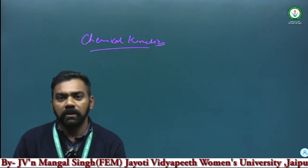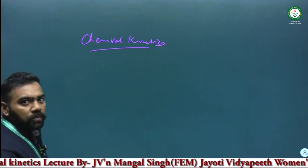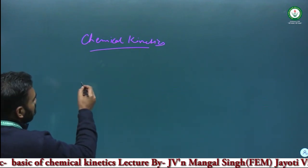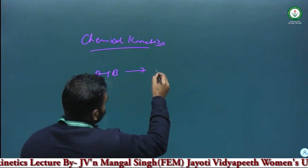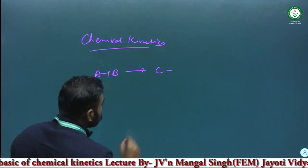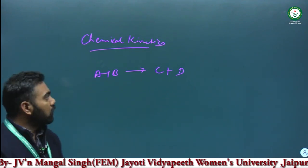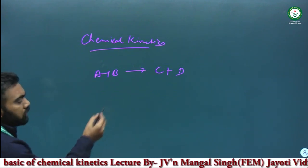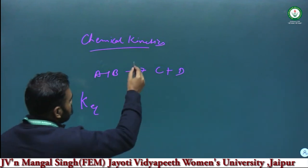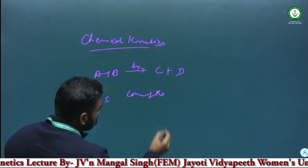First of all, I will discuss why there is a need for chemical kinetics and why we study this particular field of chemistry. As we know, in thermodynamics we talk about equilibrium constants. For example, for a chemical reaction A plus B proceeding to form products C plus D, according to thermodynamics we describe reactions based on the equilibrium constant K.